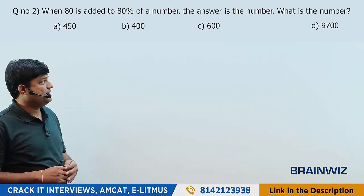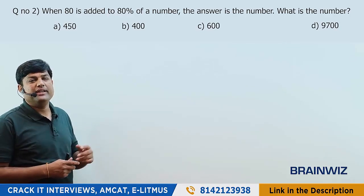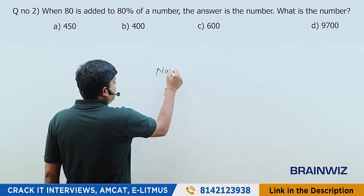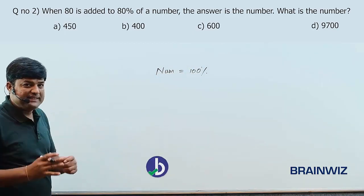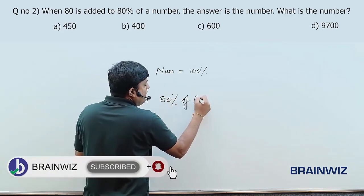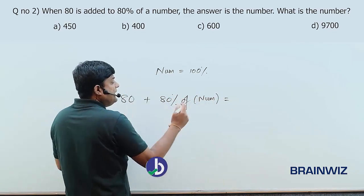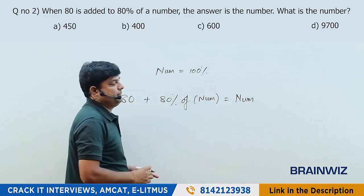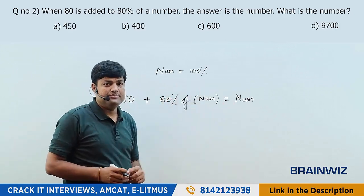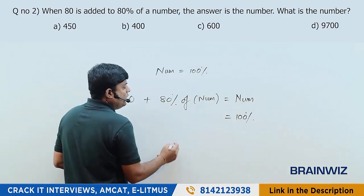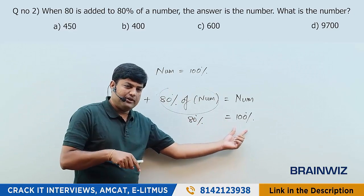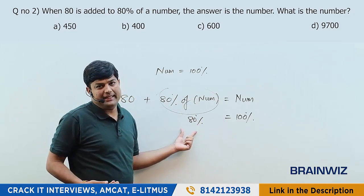Let's try the second question. If 80 is added to 80% of the number, we get the number back. Find the number. Like before, we take the number as 100%. He told us 80% of the number is known. To reach 100%, how much more percent is lacking?